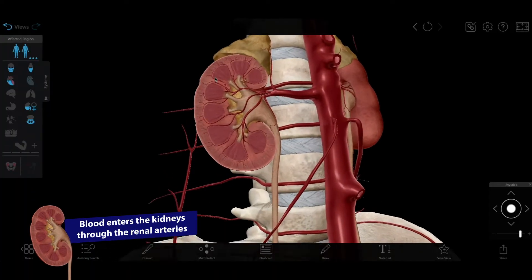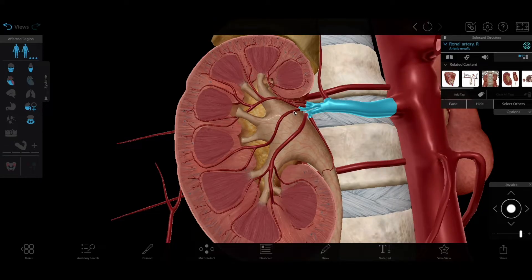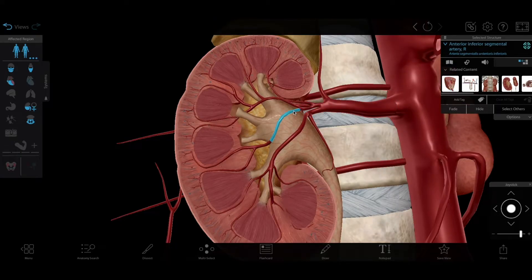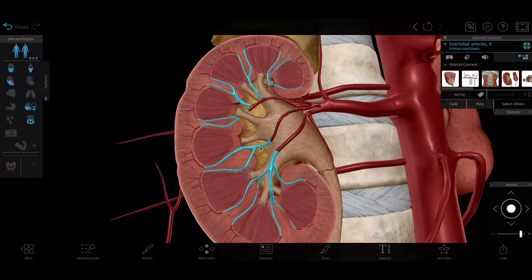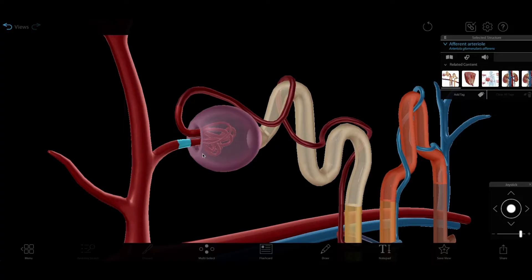Blood enters the kidneys through the renal arteries. From there, it flows through a series of smaller and smaller blood vessels: the segmental arteries, interlobular arteries, arcuate arteries, and afferent arterioles.